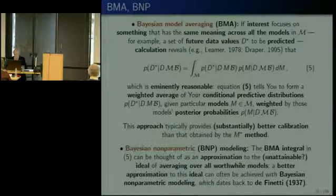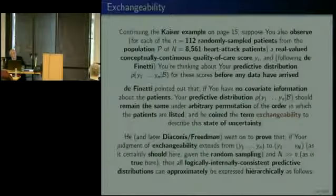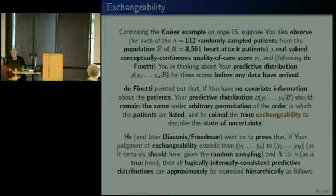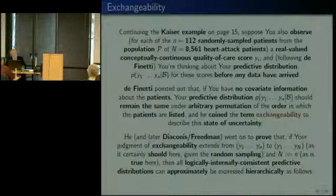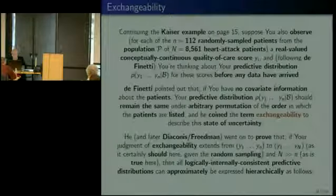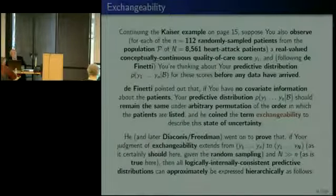Let's continue the example from Kaiser. Suppose in addition to observing for each of those 112 people not only whether they had an unplanned transfer to the intensive care unit, I also measure a real-valued conceptually continuous quality of care score Y_i. Before I have any data values, my predictive distribution for those continuous quantities given the background information is still exchangeable within the absence of any covariates. He then proved a generalization of his earlier representation theorem for dichotomous outcomes — now a representation theorem for continuous outcomes.